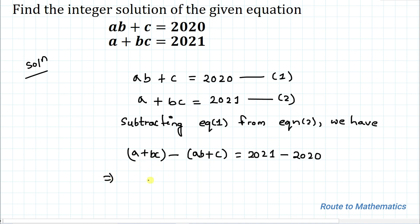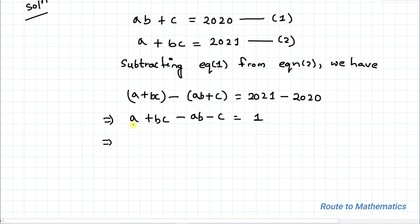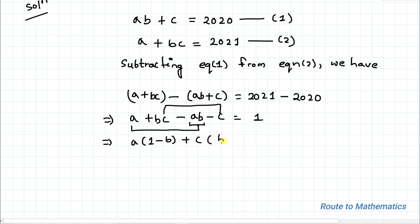Expanding the bracket, we get A plus BC minus AB minus C equals 1. Now let's take A common from the first two terms, giving A(1 minus B), and take C common from the remaining terms, giving plus C(B minus 1) equals 1.